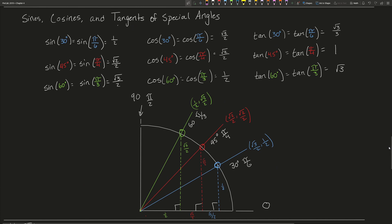Some important angles we need to know the sines, cosines, and tangents of align very well with the unit circle. Sine of 30 degrees or pi over 6 is always 1 half. Cosine of 30 or pi over 6 is always root 3 over 2. Tangent of 30 or pi over 6 is root 3 over 3. Sine of 45 is root 2 over 2, cosine of 45 is root 2 over 2, and tangent of 45 is 1. Sine of 60 is root 3 over 2, cosine of 60 is 1 half, and tangent of 60 is root 3. We just found all of those with the triangles we did, and it corresponds exactly with the unit circle.